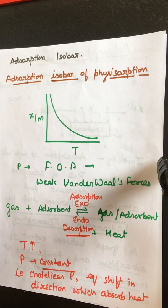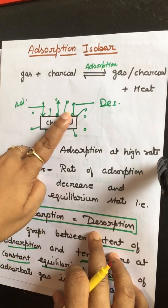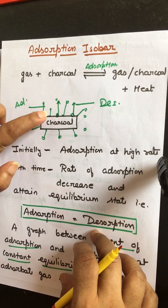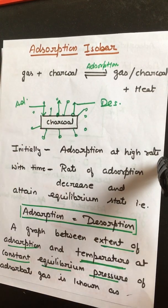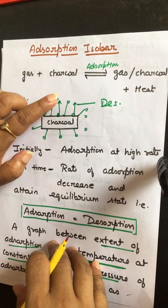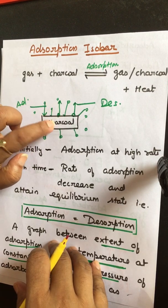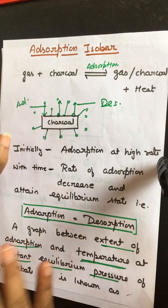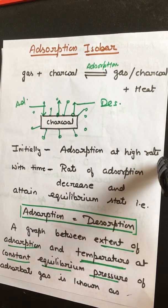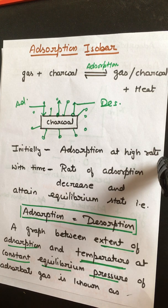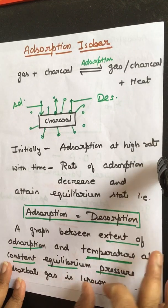In case of physisorption, if we increase temperature at constant equilibrium pressure, the kinetic energy of gas particles increases and they escape from the surface of the charcoal, because only weak van der Waals forces exist between them. Also, by Le Chatelier's principle, increasing temperature shifts equilibrium toward the endothermic side, which is desorption.